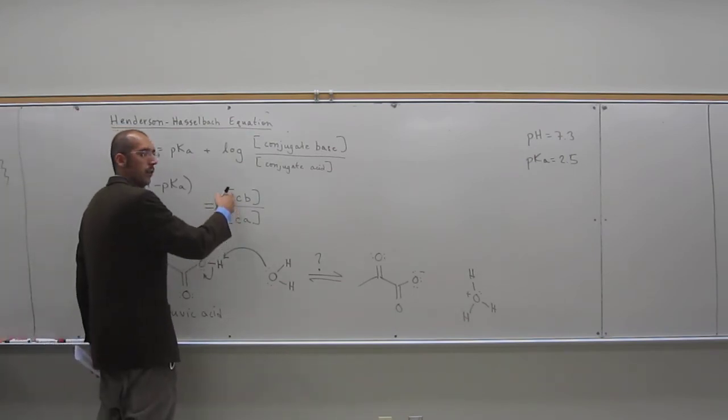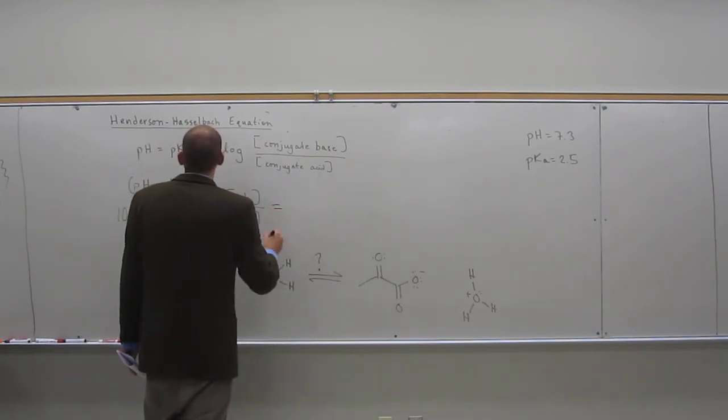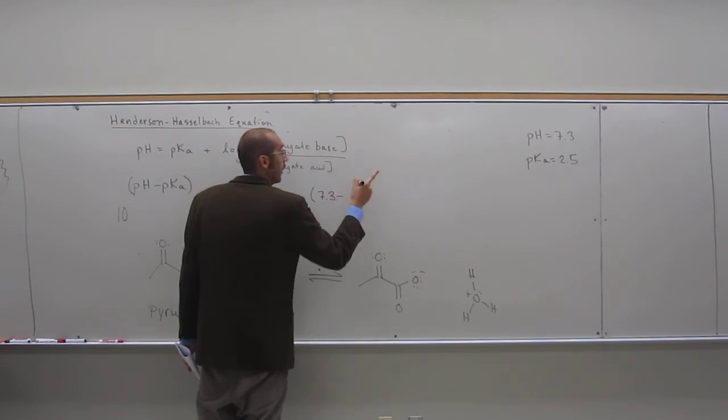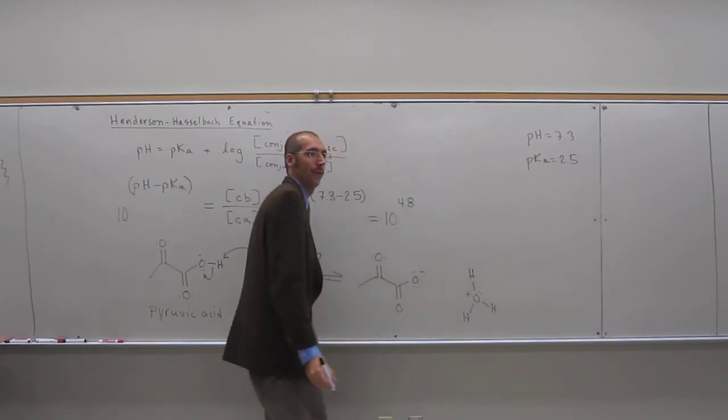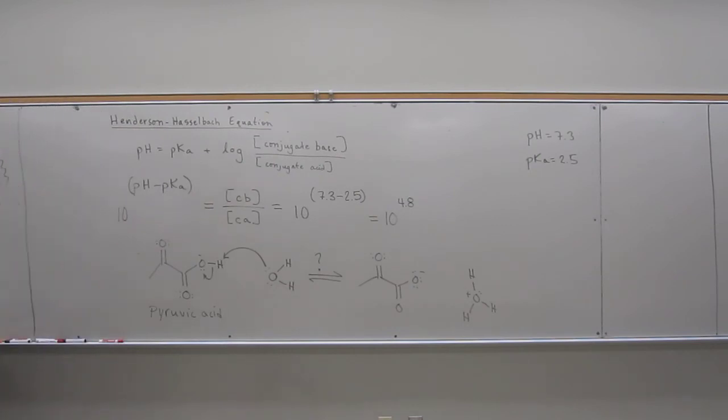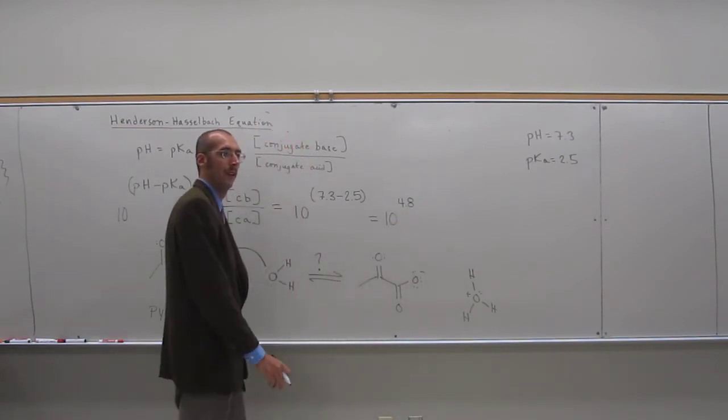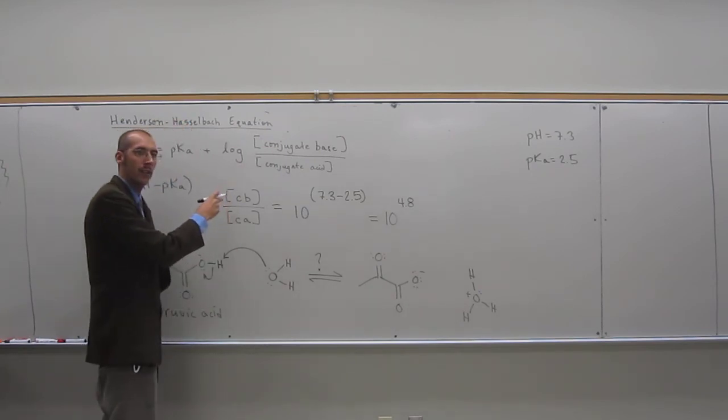So you just know that this ratio here, and that's all you're looking for is that ratio, because which one, right? So that ratio is going to be 10 to the pH 7.3 minus pKa 2.5, okay? So when we do that, we get 10 to the what? Good job, guys, 4.8. Is that bigger than one or less than one? Bigger than one, right? So what would we expect? More of the conjugate base or the acid? The base. The base, right?